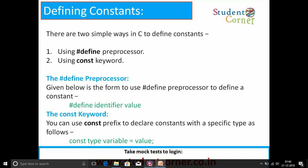Defining constants. There are two simple ways in C to define constants: using #define preprocessor and using const keyword. These two things were learned in the introduction to C and C tokens concept. Again we are repeating it. #define preprocessor: given below is the form to use #define preprocessor to define a constant: #define identifier value.